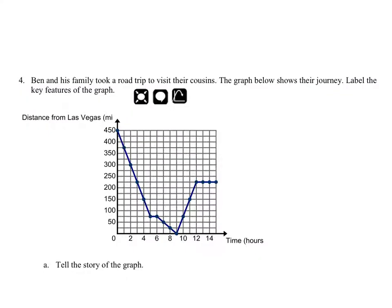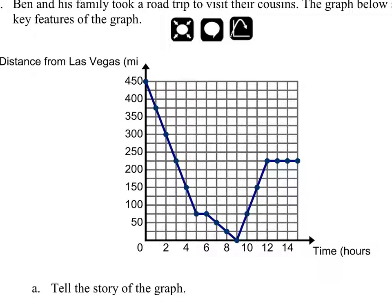Ben and his family took a road trip to visit their cousins. The graph below shows their journey. Label the key features of the graph. Looking at this graph, we can see that they're traveling at some kind of constant rate because we've got a straight line. But then there's a stop. And then this line right here from 6 to 9, that one's not as steep as the one from 0 to 5. So they were going slower for some purpose. And then the line changes direction and starts to go pretty steep, and then it flattens out.